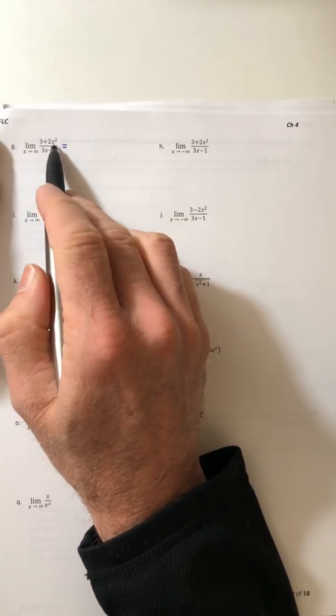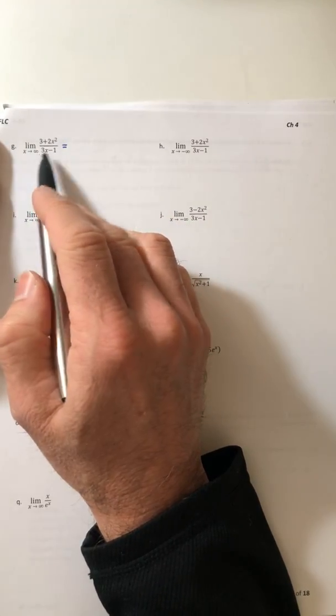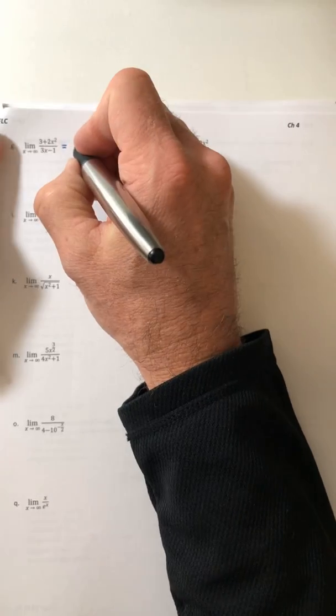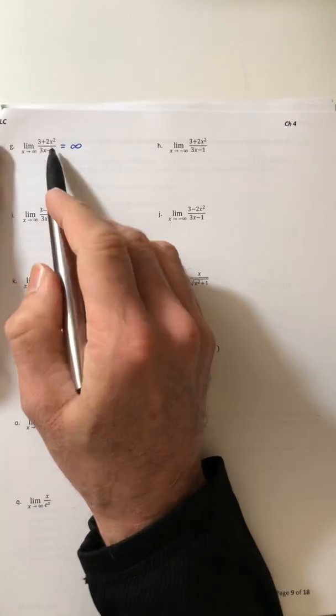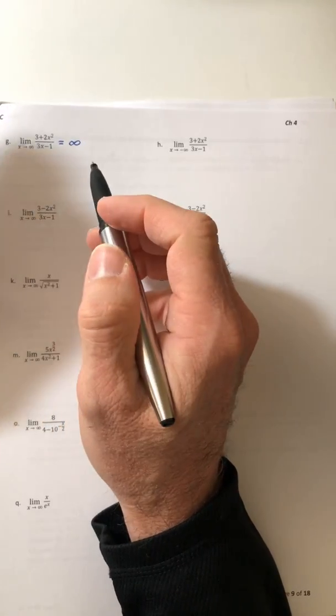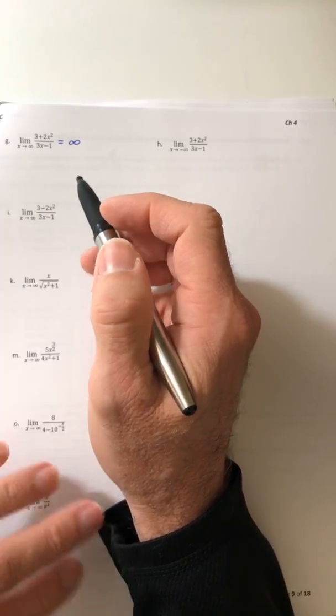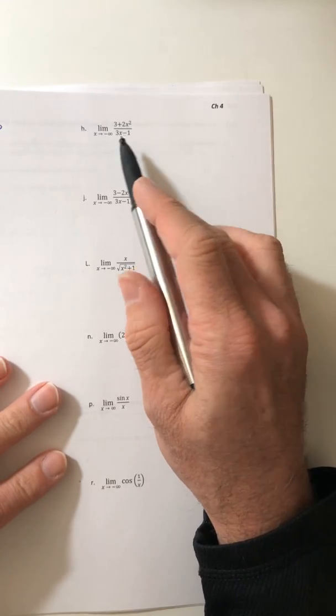Okay, so this one the numerator has a larger degree, so it's going to go off to positive infinity. You don't need to worry about a coefficient because anything times infinity is still infinity. Okay, so let's look at the second one.